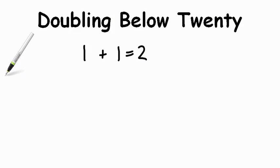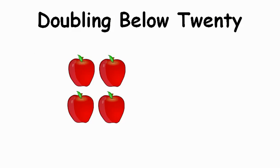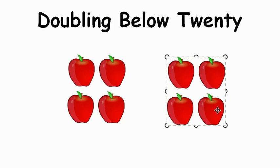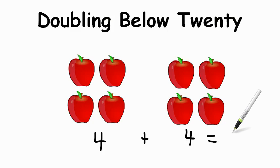So we're going to be working with other numbers today that we can double to help us add below 20. Here we have 4 apples. If we were to double that amount, what would we have to do? That's right, we'd add another 4. So here we have another 4 here. So if we were going to look at that as an addition sentence, the doubles fact would be 4 plus 4 and that would equal 8. Nice job.